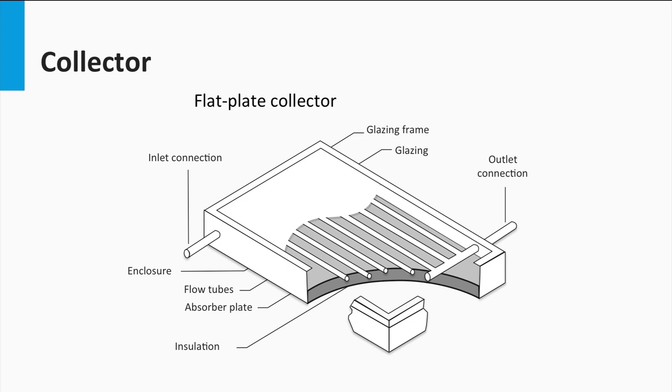Another way to classify collectors is by their shape. In that case, we can consider flat plate collectors and concentrating collectors. Flat plate collectors, as indicated by the name, consist of flat absorbers oriented towards the sun. They can deliver moderate temperatures around 100 degrees Celsius. They use both direct and diffused solar radiation, so they don't require tracking systems. The main applications are solar water heating, building heating, air conditioning, and industrial process heat.